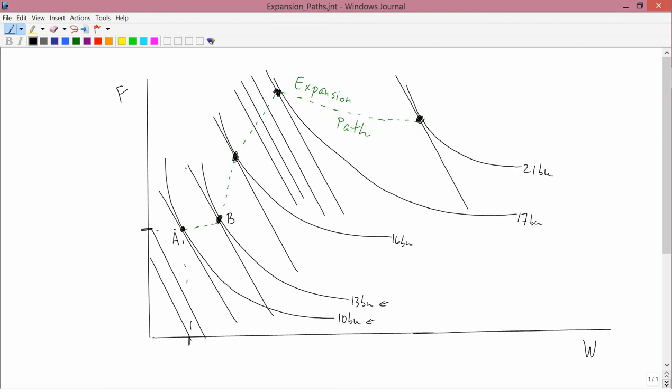To the right means more water, above means more fertilizer. So when you go from 10 bushels of corn to 13 bushels of corn, you use more water and more fertilizer to do that. Same when you go from B to C. Same when you go from C to D. Every time you're expanding corn output from 10 to 13 to 16 to 17, you're buying more water and more fertilizer. But that's not what happens when you go from point D to point E.